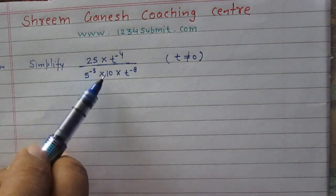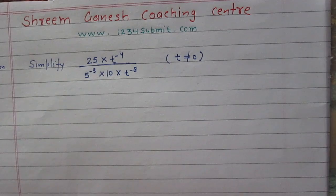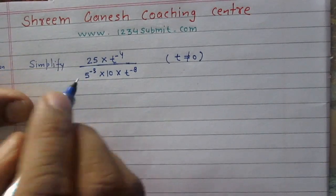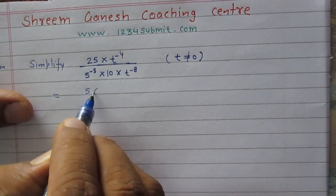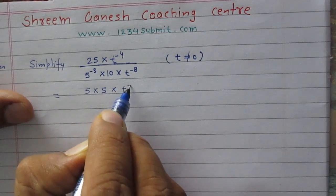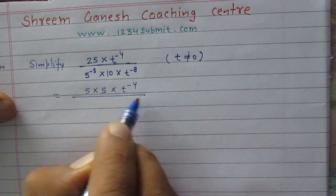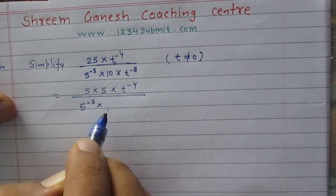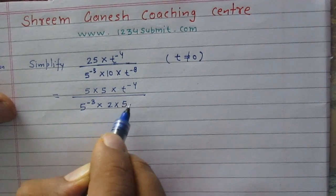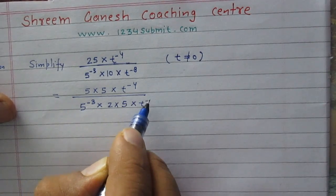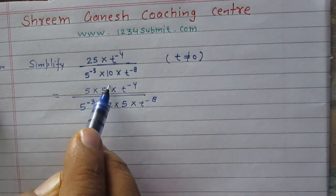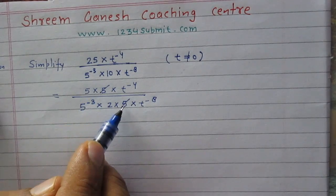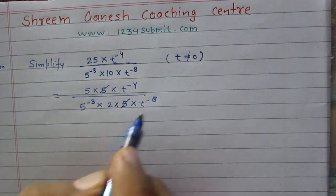We can see that 25 and 10 can be factorized, so we will factorize them first. 25 is 5 multiplied by 5, then t raised to power minus 4 in the numerator; in the denominator we have 5 raised to power minus 3, and then 10 which can be written as 2 multiplied by 5, and t raised to power minus 8.